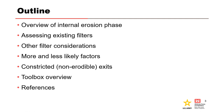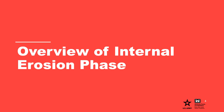We'll begin with an overview of the continuation phase of internal erosion, then move on to a discussion of how to assess existing filters and discuss other filter considerations that can affect filter performance. We'll wrap up with a discussion of more and less likely factors, as well as constricted or non-erodible exits that may be associated with defects in embedded structures.